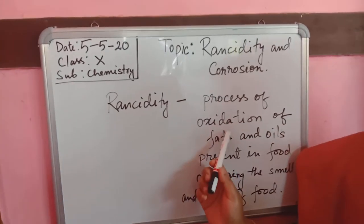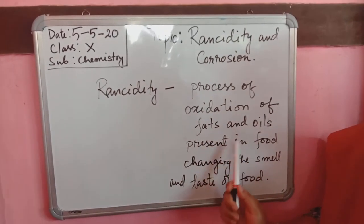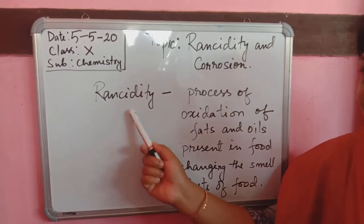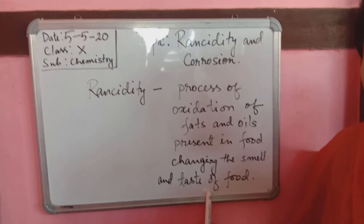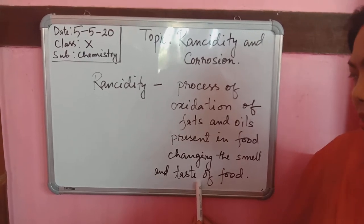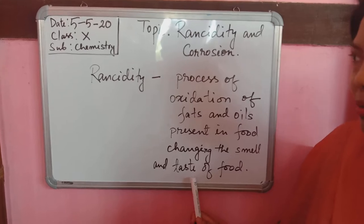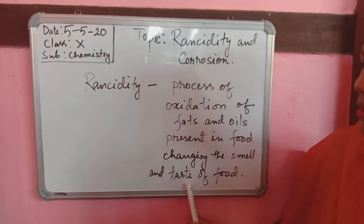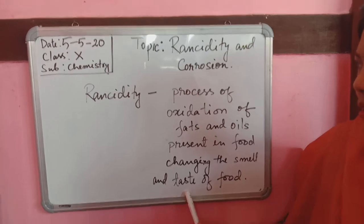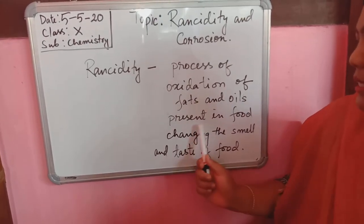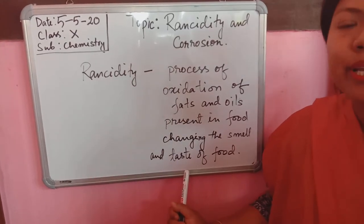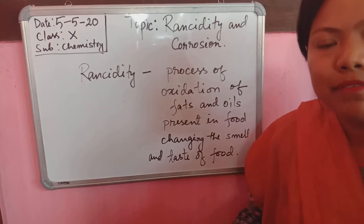For the definition of rancidity: rancidity is the process of oxidation of fats and oils present in food, changing the smell and taste of the food. While writing your definition, you must include this last point — many students simply write 'oxidation of fats and oils present in food is rancidity,' but you must mention what happens after oxidation, i.e., the after-effect on smell and taste. So your definition must always include: 'the process of oxidation of fats and oils present in food, changing the smell and taste of the food, is called rancidity.'